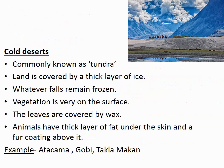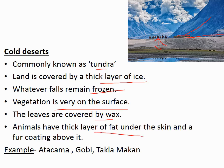Cold deserts are commonly known as tundra. The land is covered by a thick layer of ice, and the soil remains frozen. Vegetation is very sparse — bryophytes, mosses, algae, and some thorny plants whose leaves are covered with wax. Animals have a very thick fat layer under the skin — something like blubber — and a fur coating above it. The polar bear is a good example. Examples of cold deserts include the Atacama, Gobi, and Taklamakan.